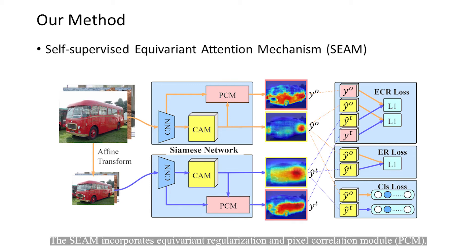The scheme incorporates equivariant regularization and a pixel correlation module. A Siamese network structure is adopted and equivariant regularization is applied on the outputs of two branches, whose inputs are augmented from the same image.